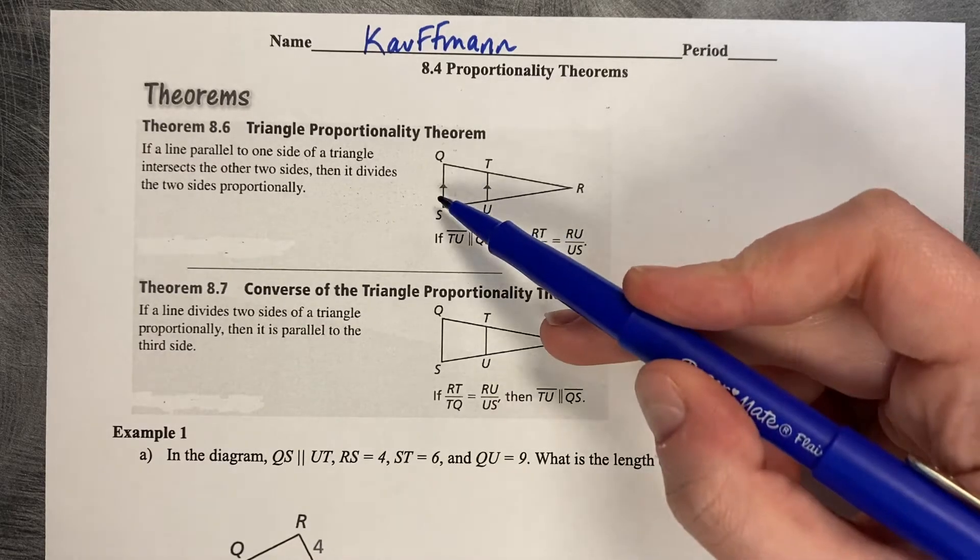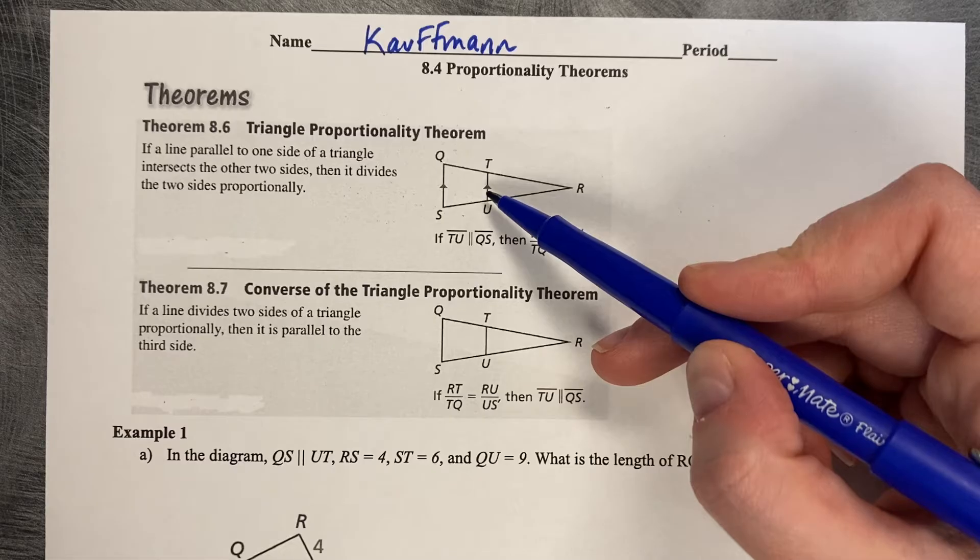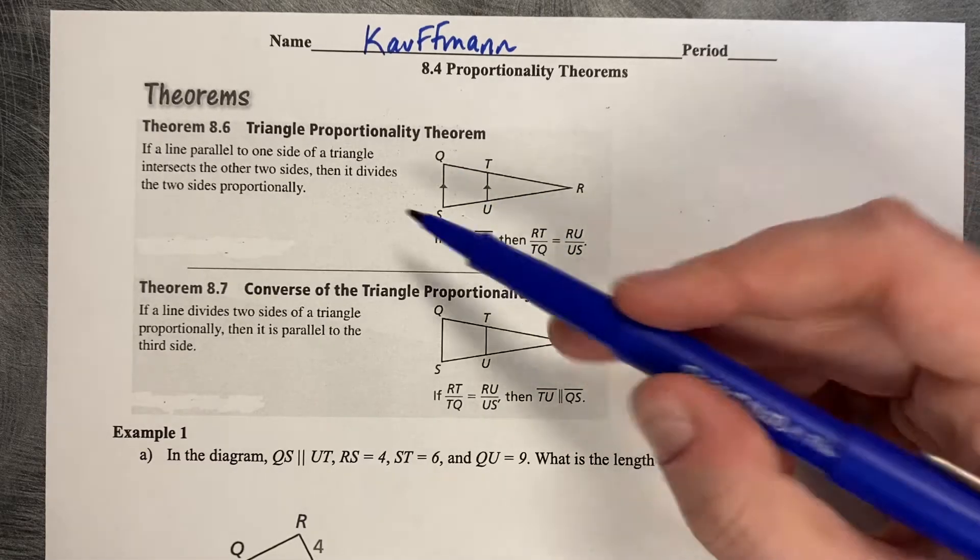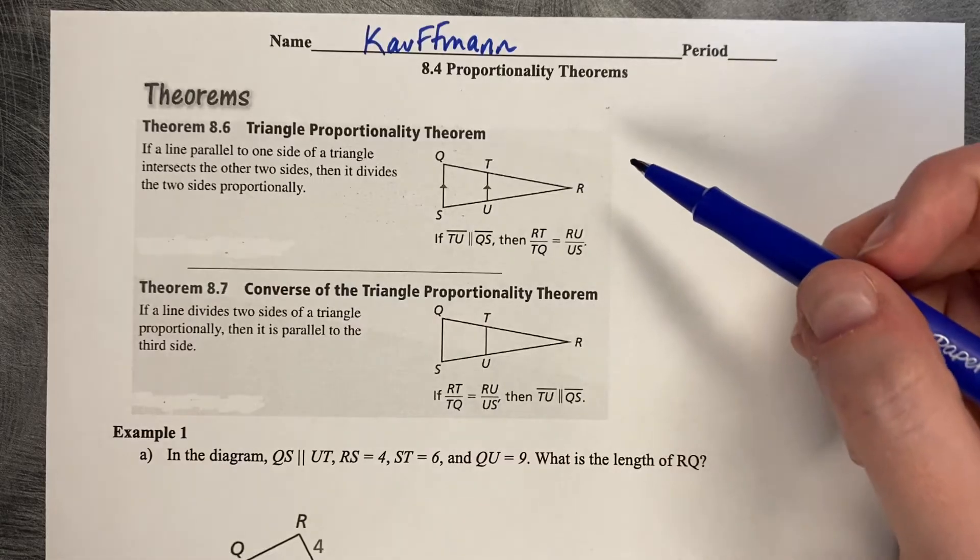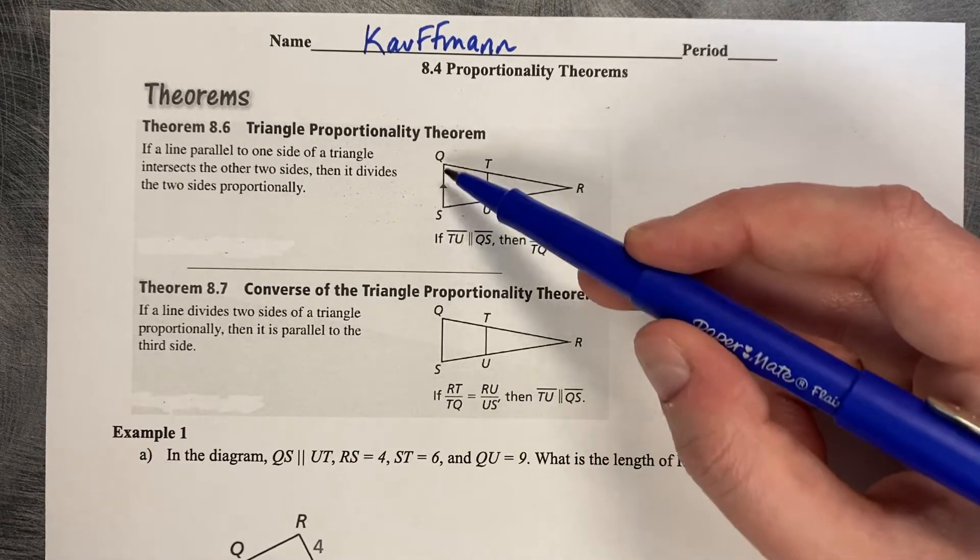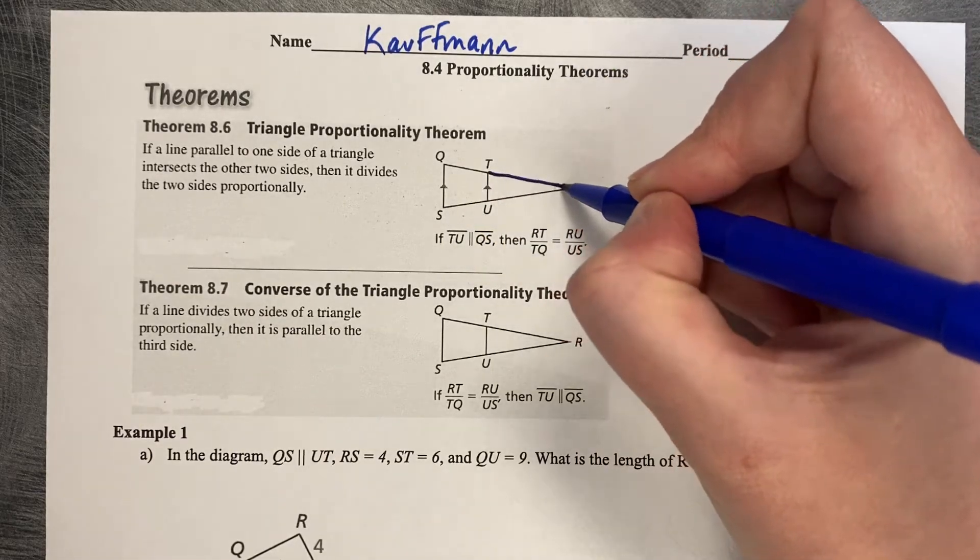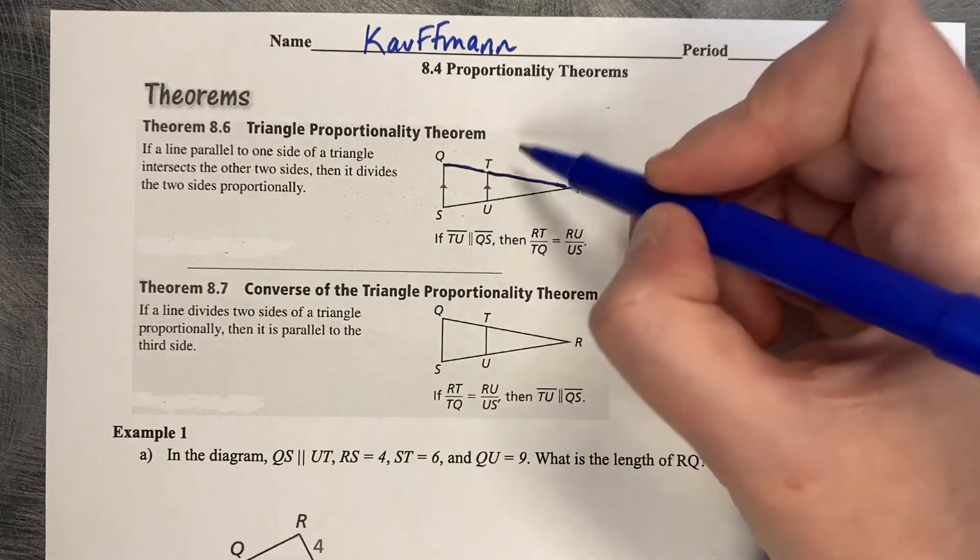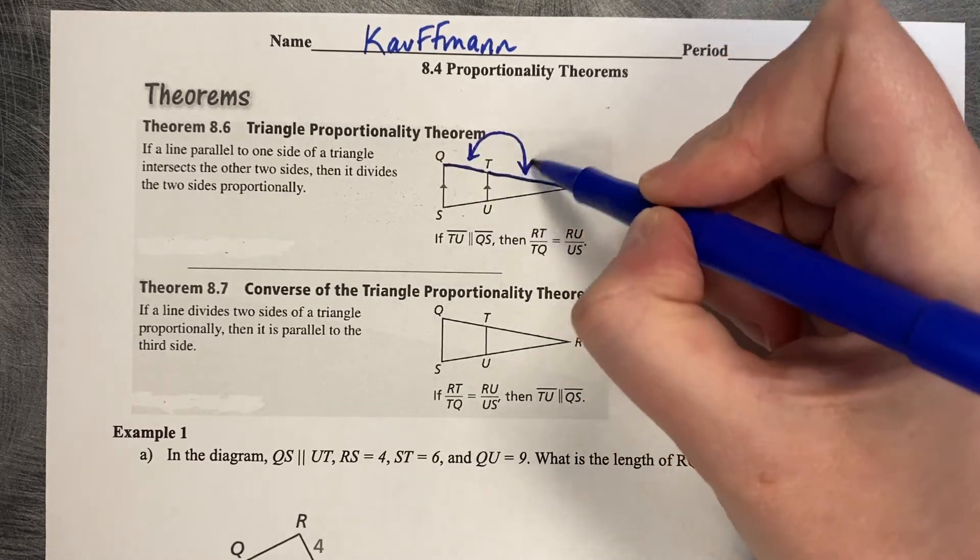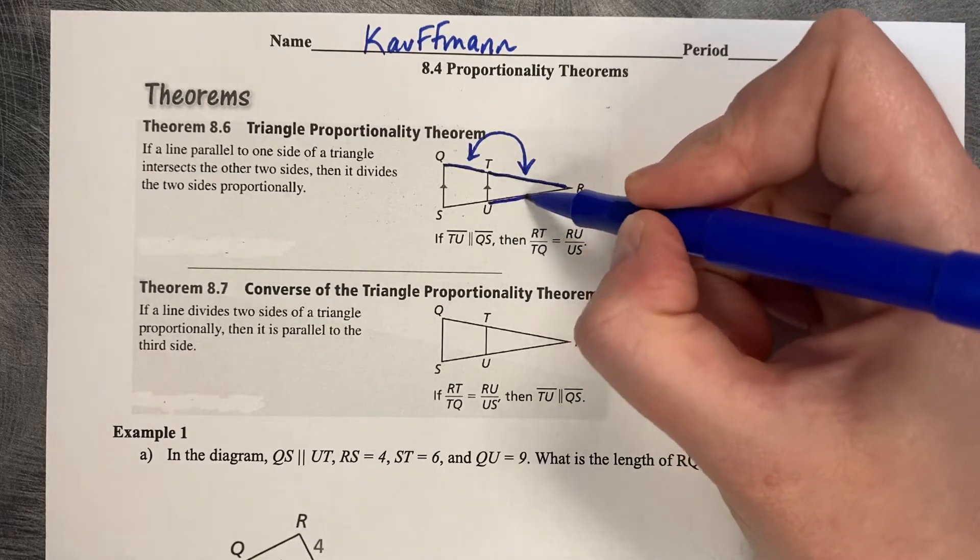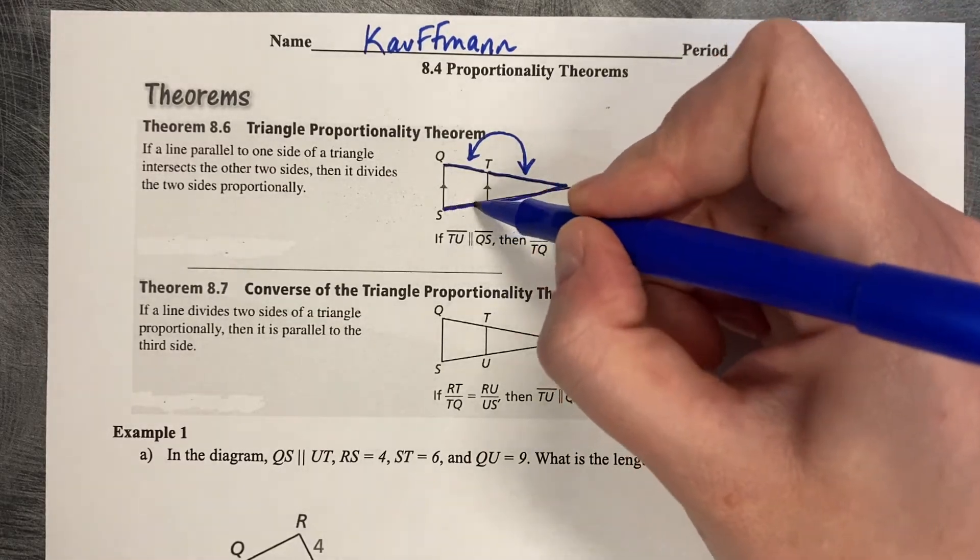Theorem 8.6 says if a line is parallel to one side of the triangle, it divides the other two sides proportionately. So if we say that TU is parallel to QS, then RT is proportionate to TQ. These two side lengths are proportionate to each other, and RU is proportionate to US.